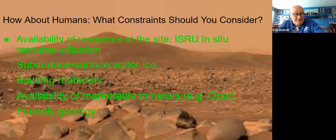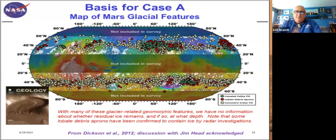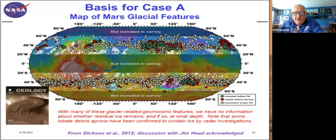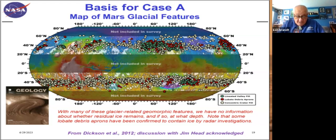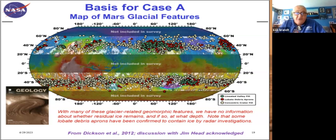Friendly geology — this map shows all the places on Mars where there's evidence of glacier-related geomorphism. Glaciers helped carve the landscape, or they left remains, or as you can see in the lower-left inset, they might still be there covered up by sand and dust, which acts as an effective insulator from the sun. There are abundant locations where there are glaciers on Mars. The key question is: do you find a glacier that still has water ice?